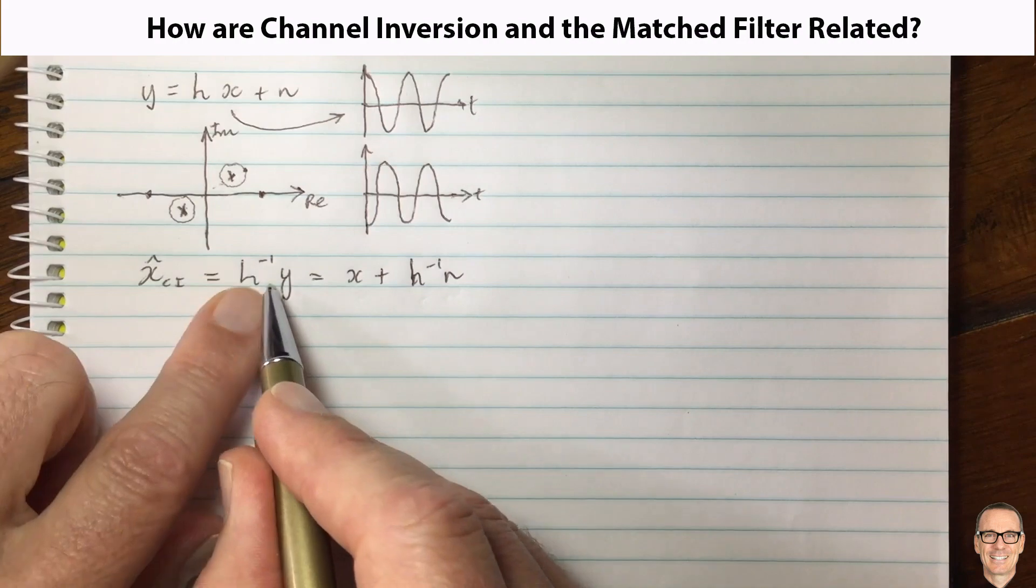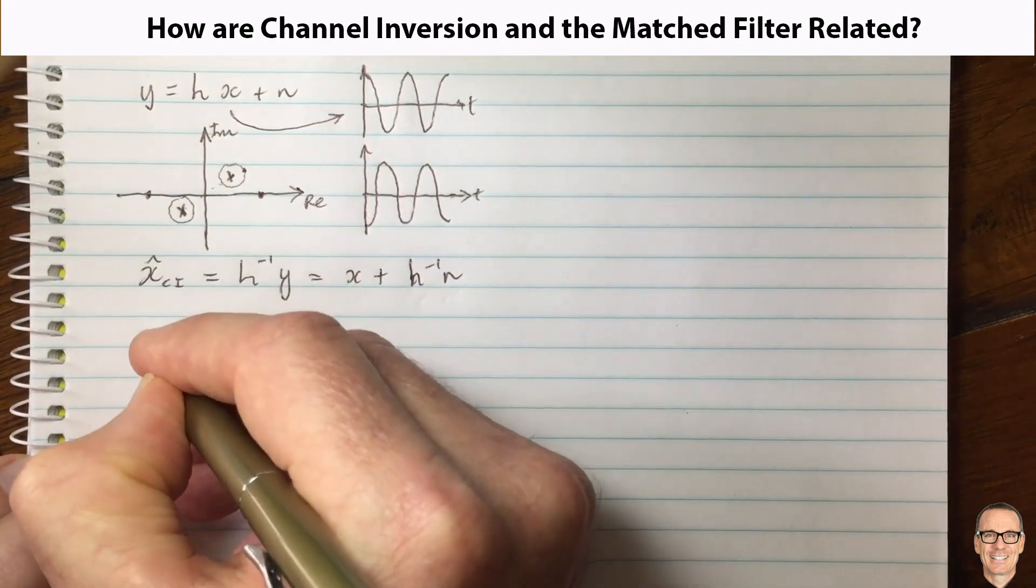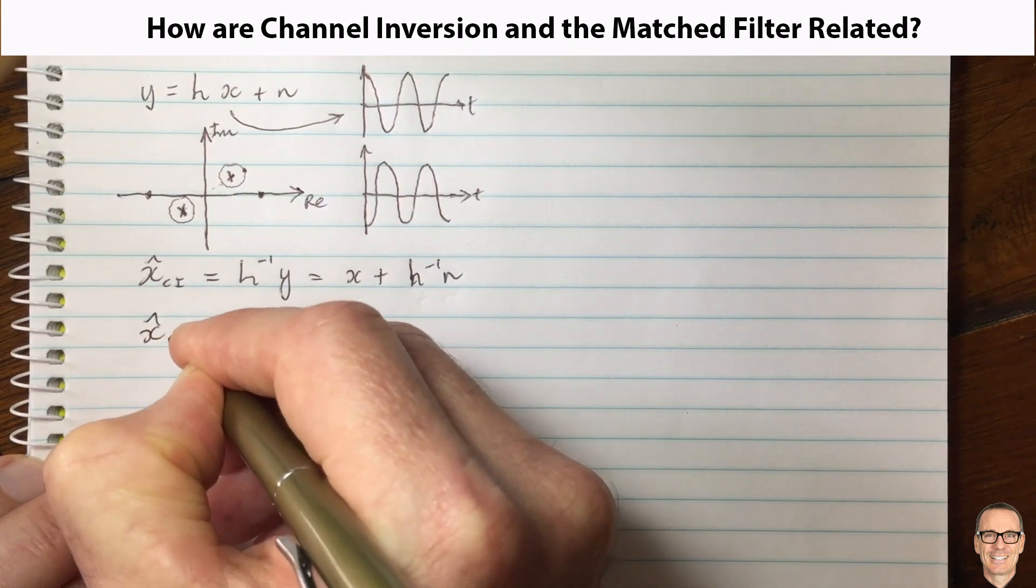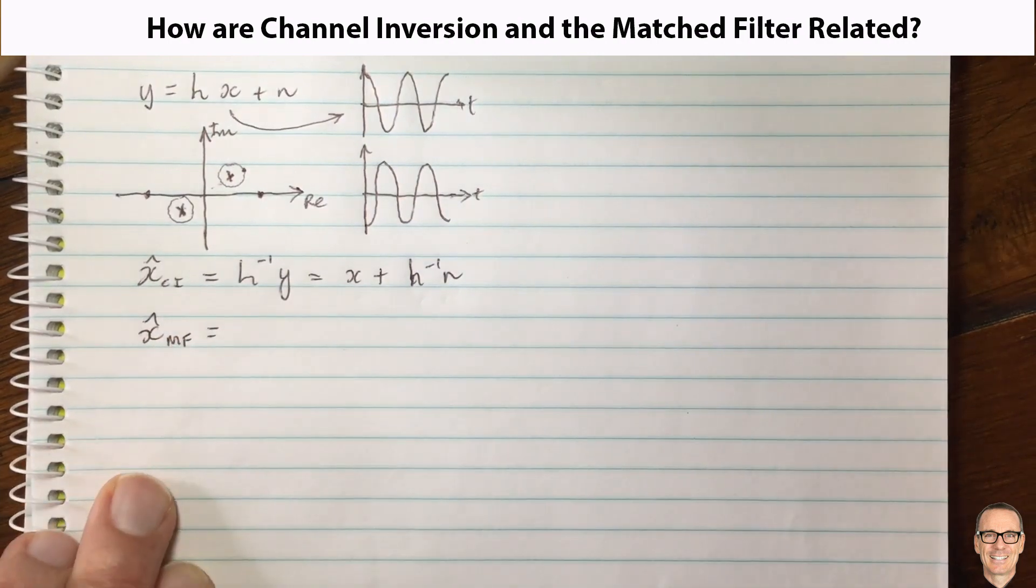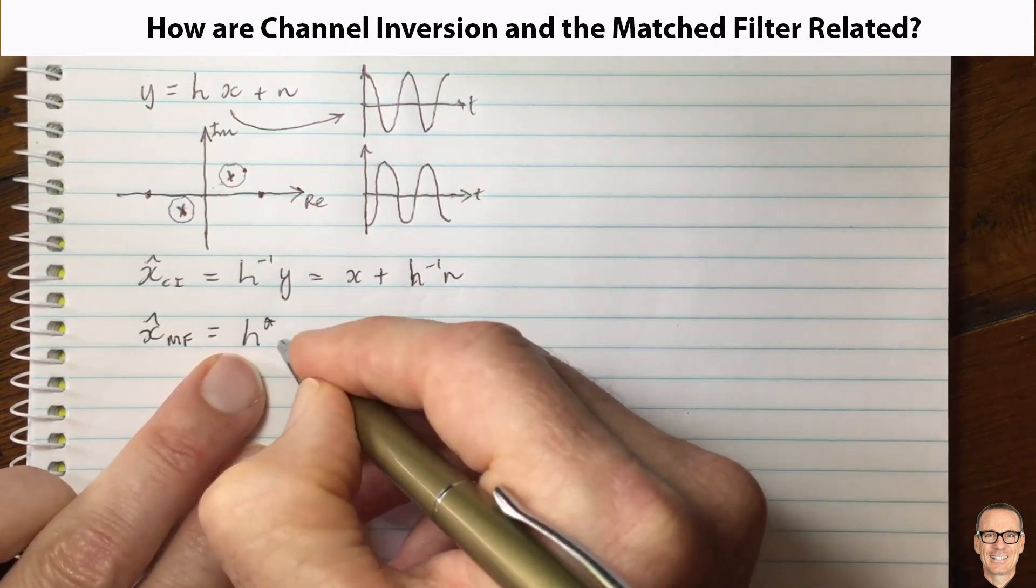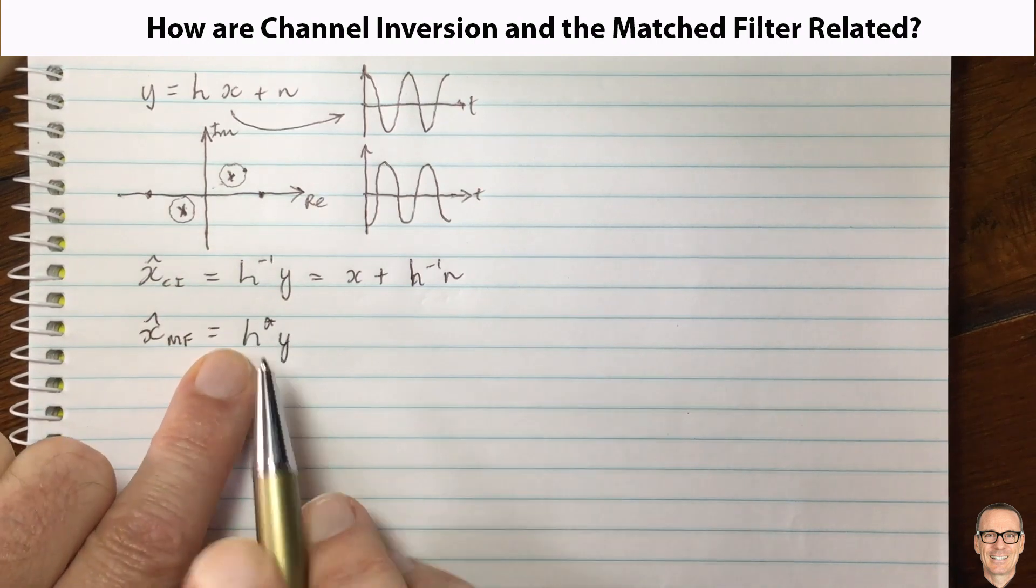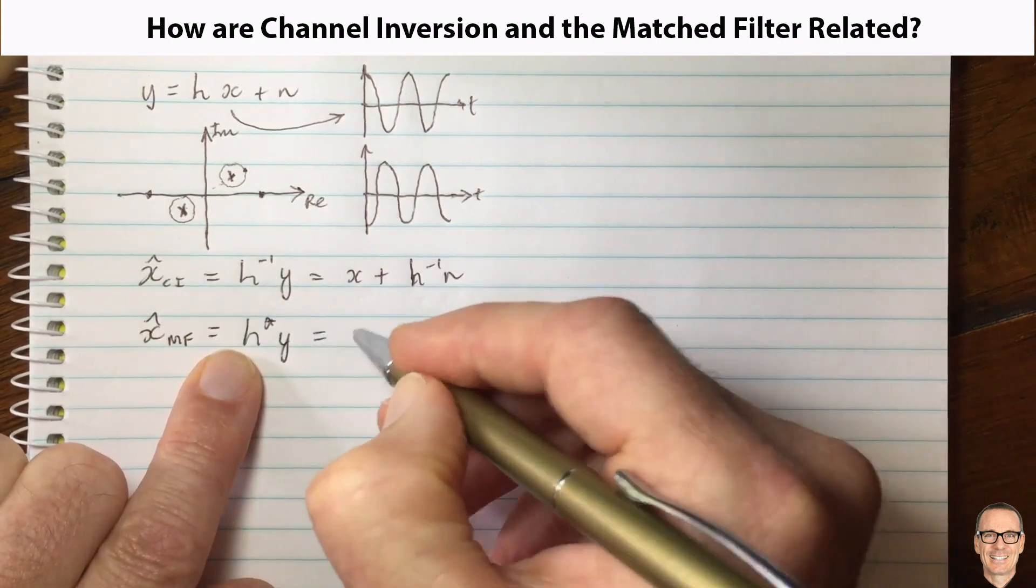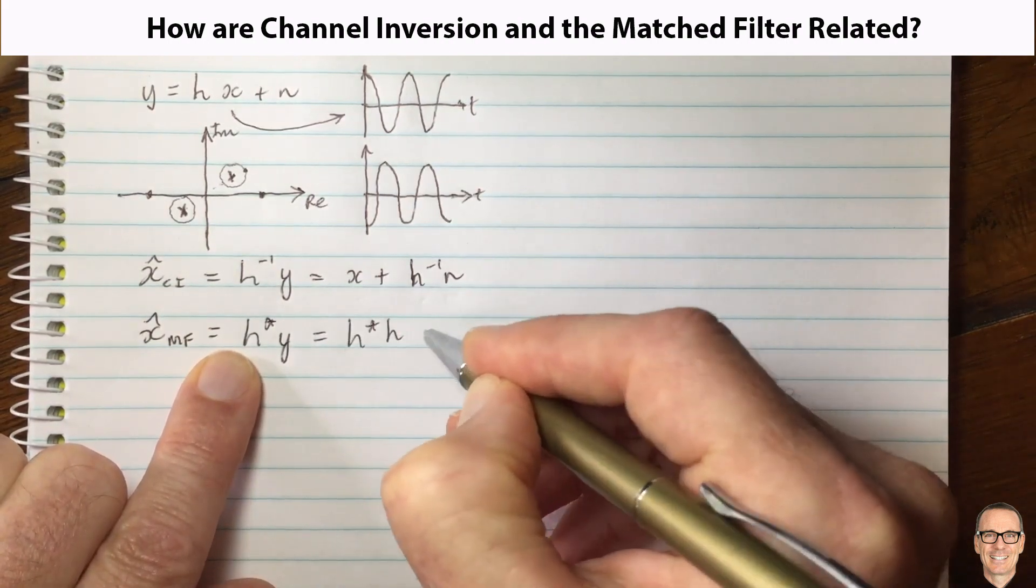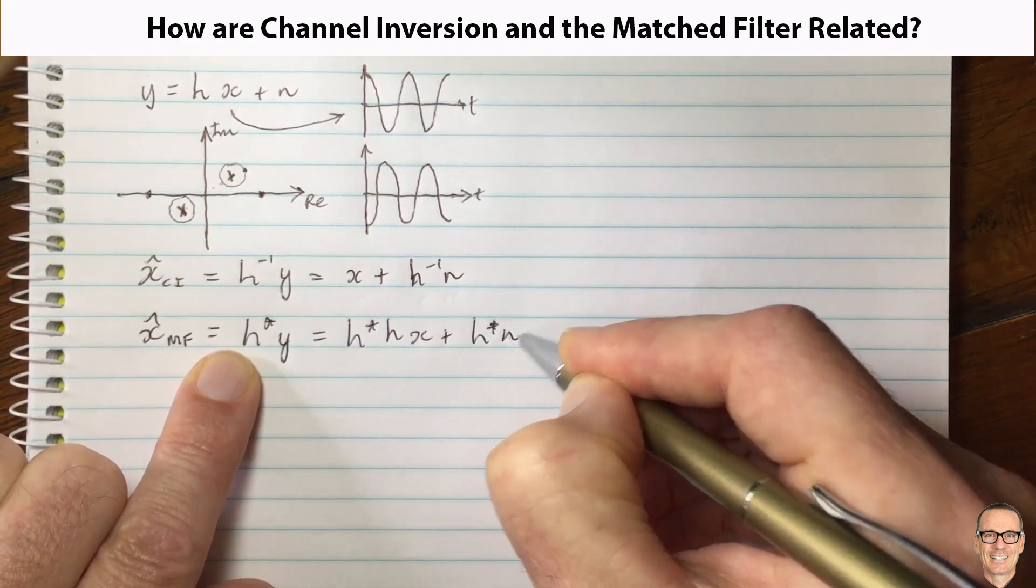Another thing you could do. So this is one thing you could do, but there's other things you can do. What else could you do? Well, let's look at a thing which is called the matched filter, and it turns out that one other thing you could do is multiply by the complex conjugate of h. Instead of inversion of h, let's do the complex conjugate of h. And so now we're going to have h-complex-conjugate times h times x plus h-complex-conjugate times n.